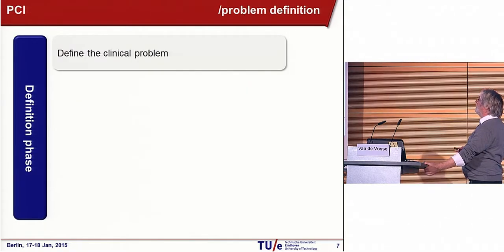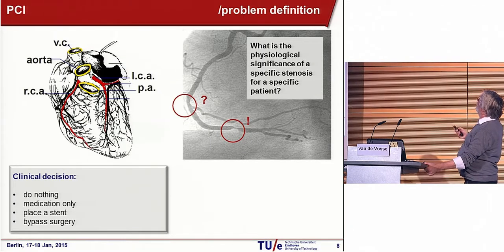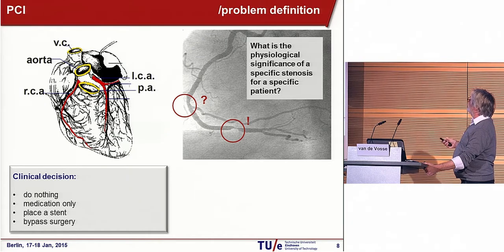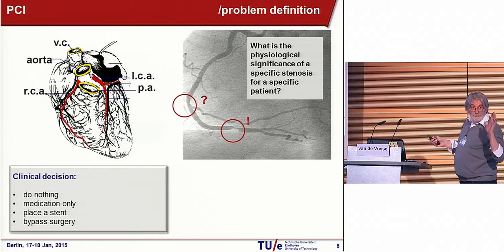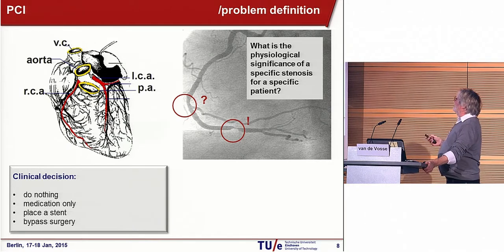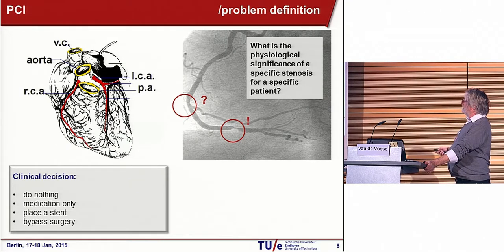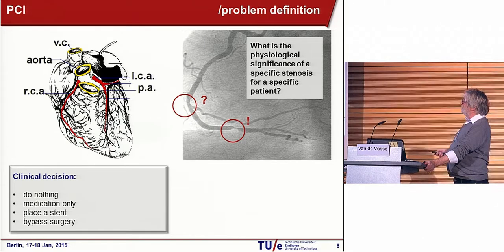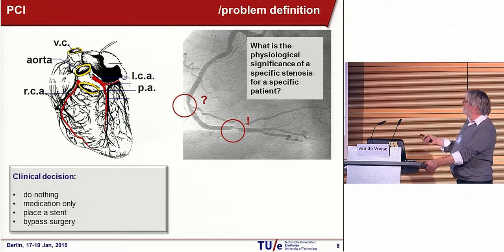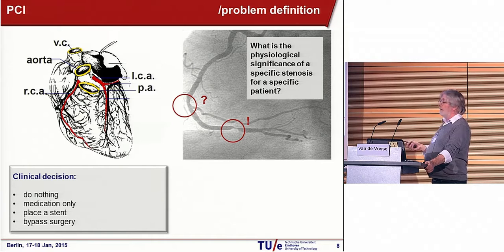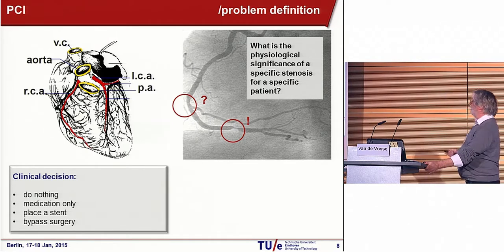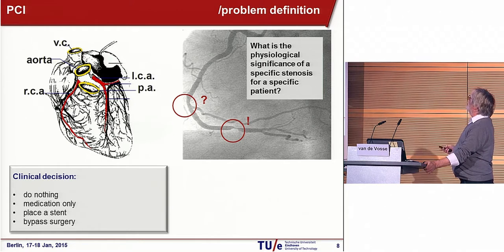Let's first look at the definition phase. I take coronary disease as an example. Here we see an angiogram of a coronary with two stenoses — this one probably severe, this one I'm not sure about. So the question is: what should we do? The clinical decision can be do nothing, give medication, place a stent or more stents, or do bypass surgery. That's the kind of decision you have to make.